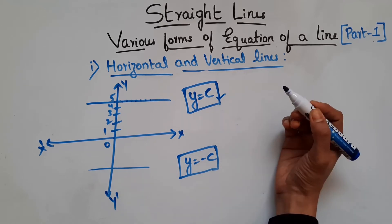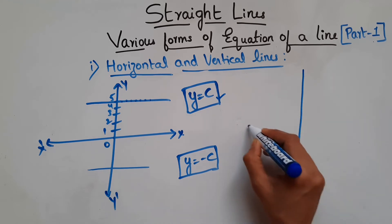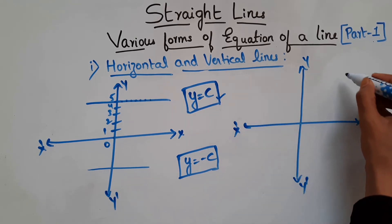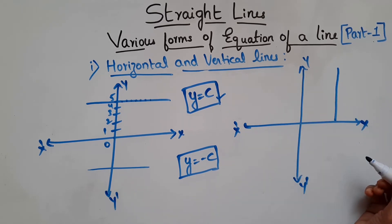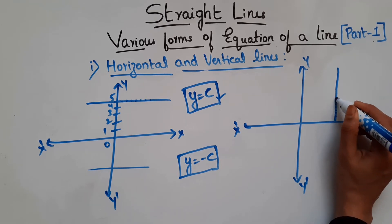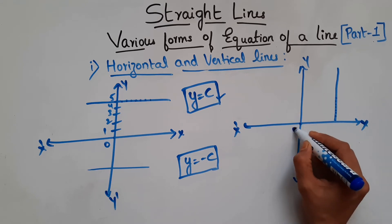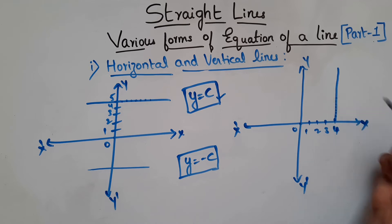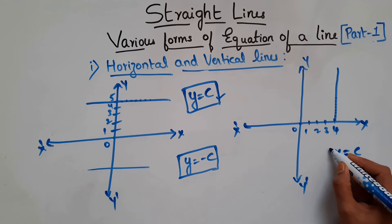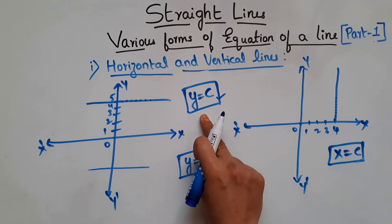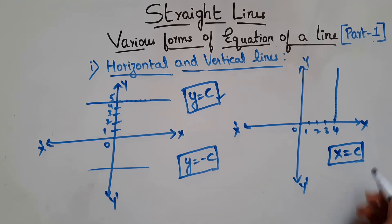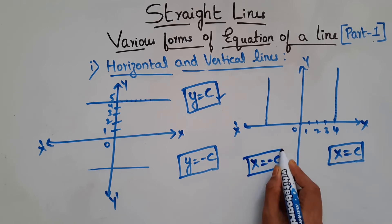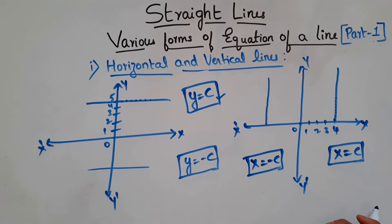Now let's see the equation for a vertical line. A vertical line is parallel to the y-axis, and every point on this line has a constant x-value. If the origin is here and the line passes through x = 4, then throughout the line x-value is 4, and y will be different. So in this case, x = a constant. If the line is on the negative axis, the equation will be x = −c, because the x-value is negative.